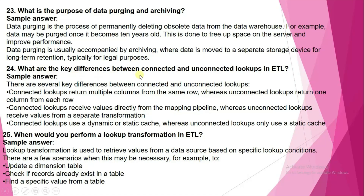What are the key differences between connected and unconnected lookups in ETL? Connected lookups return multiple columns from the same row, whereas unconnected lookups return one column from each row. Connected lookups receive values directly from the mapping pipeline, whereas unconnected lookups retrieve values from separate transformations. Connected lookups use a dynamic or static cache, whereas unconnected lookups only use a static cache.